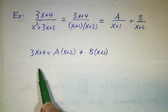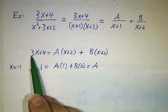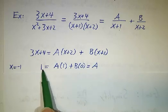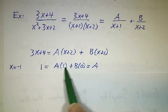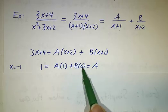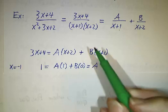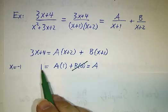So we're going to try plugging in x equals negative 1. When x equals negative 1, 3x plus 4 is 1. We get A times negative 1 plus 2, so that's A times 1, plus B times negative 1 plus 1, B times 0. So this doesn't contribute at all. And we're left with the equation A equals 1.